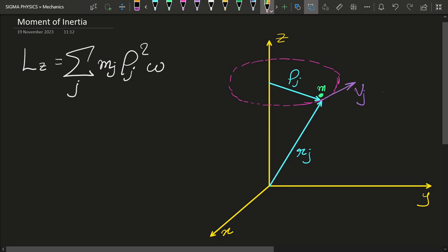In our previous video on angular momentum, we found that the angular momentum of a rigid body is given by this expression. Now let us denote the terms inside the summation that are dependent upon j by the letter I. So we will define I equal to summation over j of mj times rho j squared.